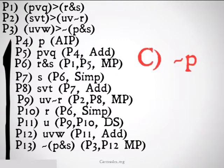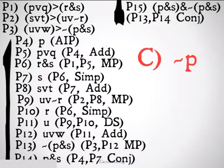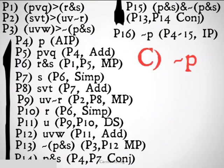Wait a second — we also had both P and S in premises 4 and 7. So we can get P and S from premise 4 and premise 7 by conjunction. We now have not (P and S) and P and S. We can conjoin these into P and S and not P and S — premises 13 and 14 conjunction. We end up with a contradiction, and that allows us to conclude the opposite of our original assumption, which is not P, from premises 4 through 15, indirect proof.